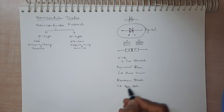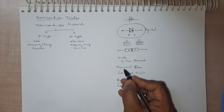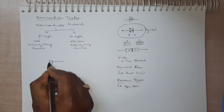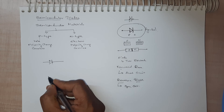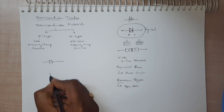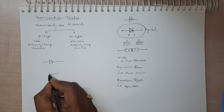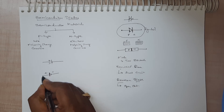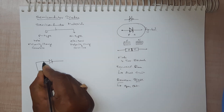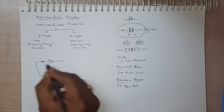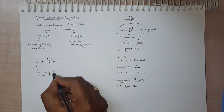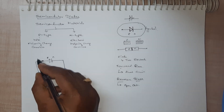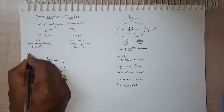What is forward bias? If we have a diode and a voltage source such as a battery, and the positive terminal of the battery is connected to the P-side of the diode and the negative terminal of the battery is connected to the N-side of the diode, then this circuit configuration is called forward bias.